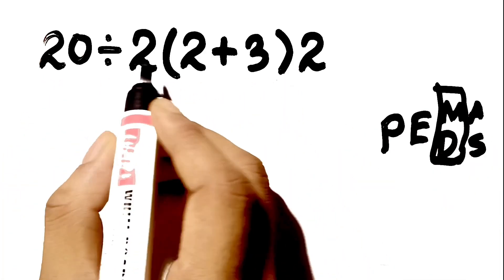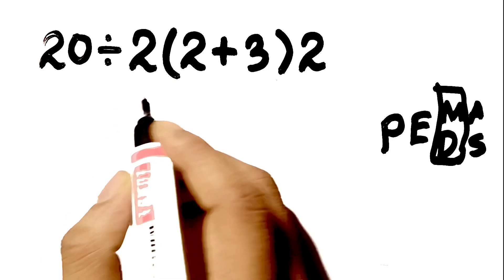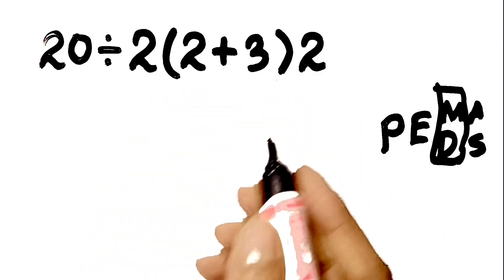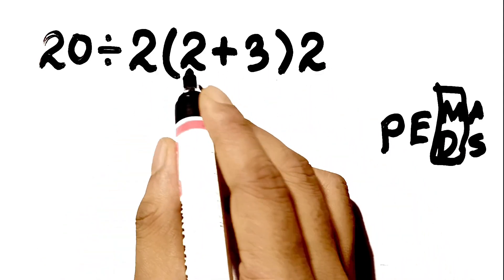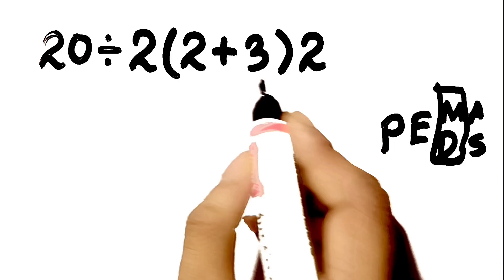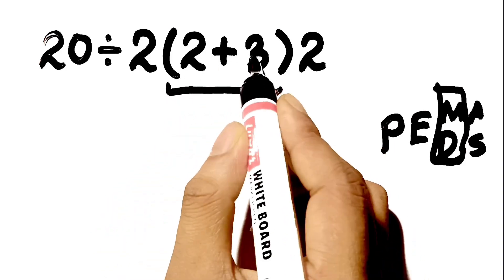In this expression we have 1 division, 2 multiplications implied by the numbers next to the parenthesis, and 1 parenthesis. Inside this parenthesis we have 1 addition.